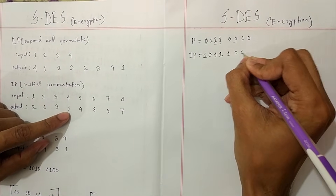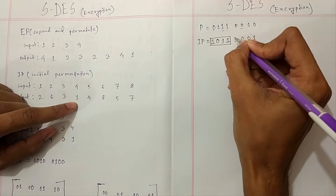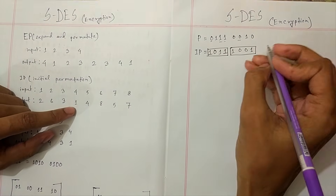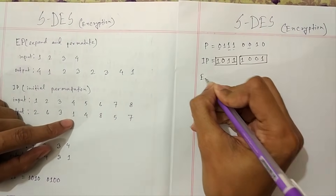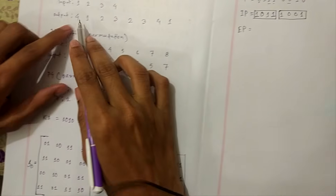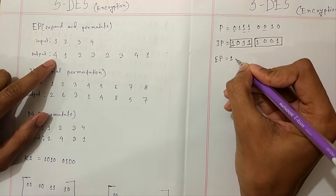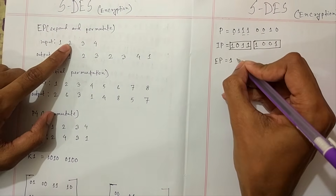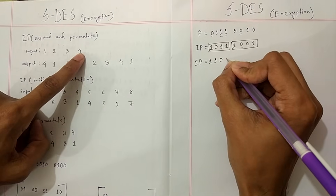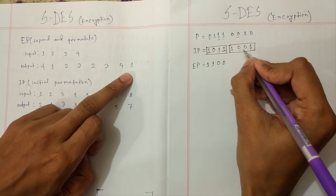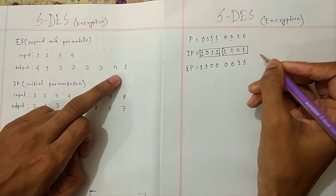We divide the IP result into two parts, and for the last part we evaluate the EP (Expansion Permutation) value. For EP, output 4 maps to input 1. Output 4 is 1; positions map as 1→2, 2→3, 2→4, 3→0, 4→0, 1→1, 1→1. We found the EP value.